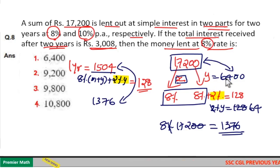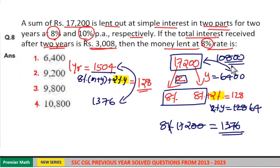17,200 minus 6,000 is equal to 11,200. 11,200 minus 400 is equal to 10,800. So, the sum lent at 8% is equal to X, which is 10,800. Option 4 is your answer.